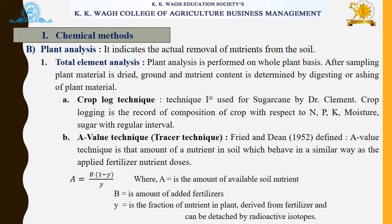Next is the A value technique, also called the tracer technique. Fried and Dean in 1952 defined it as the amount of nutrient in soil which behaves in a similar way as the applied fertilizer nutrient dose. The A value is represented by the formula: A = B(1 - Y) / Y, where A is the amount of available soil nutrient, B is the amount of added fertilizer, and Y is the fraction of nutrient in the plant derived from fertilizer, detectable by radioactive isotopes.